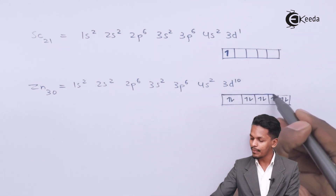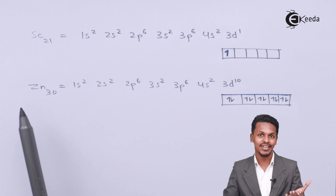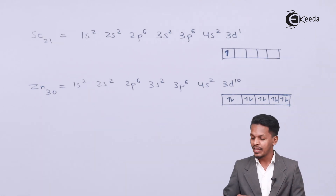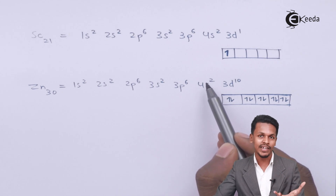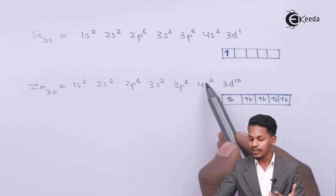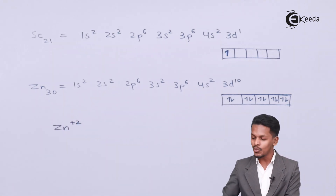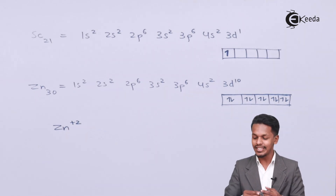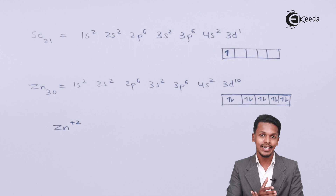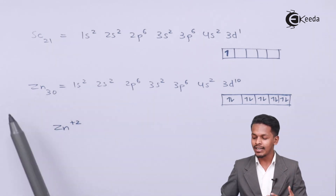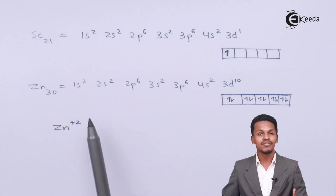As we can see, the d sub-shell in zinc is completely filled with 10 electrons (1 through 10). Therefore, zinc is a d-block element but it is not a transition element. Even in its common oxidation state of Zn2+, where the two 4s electrons are lost, the d orbitals remain completely filled — so zinc still does not meet the criterion of having incompletely filled d orbitals.